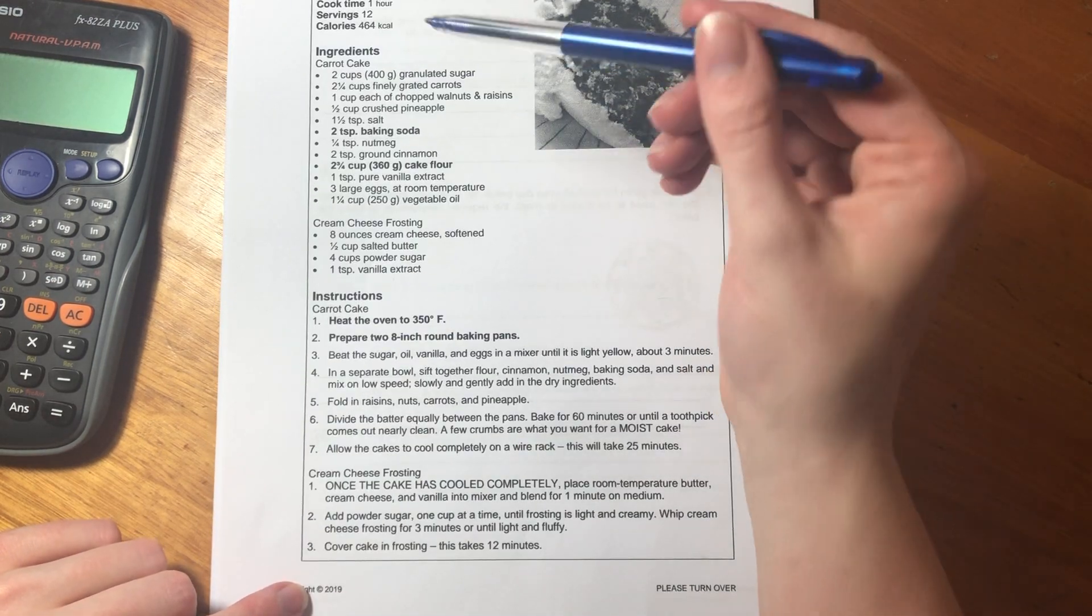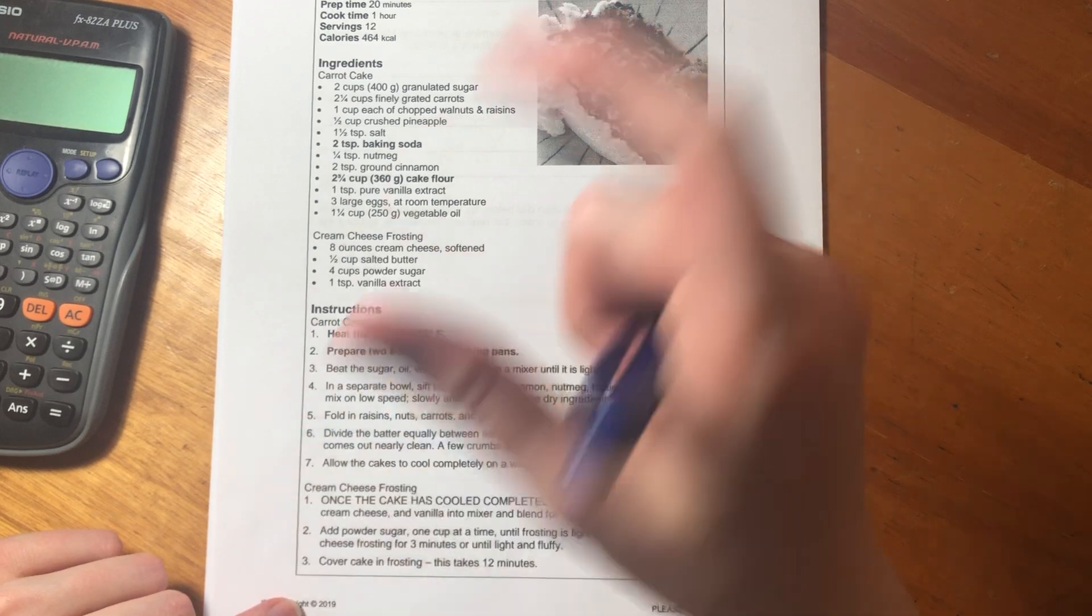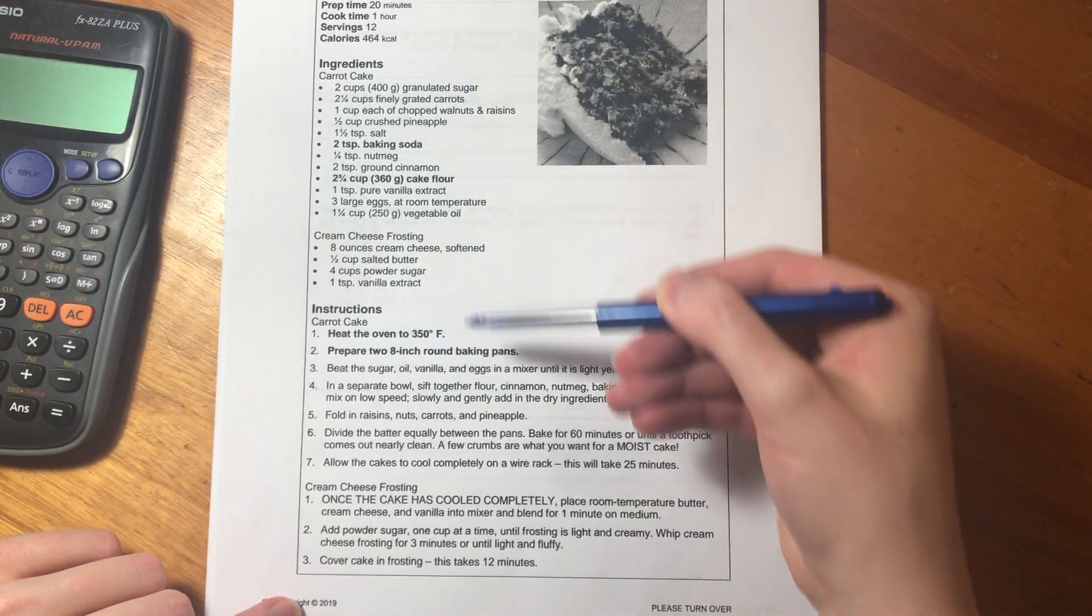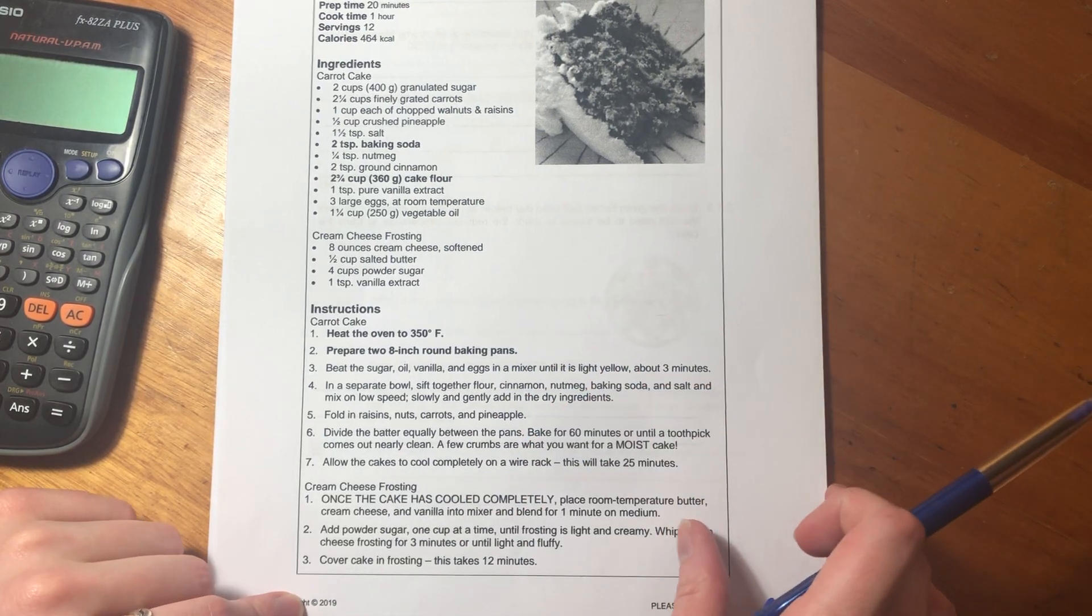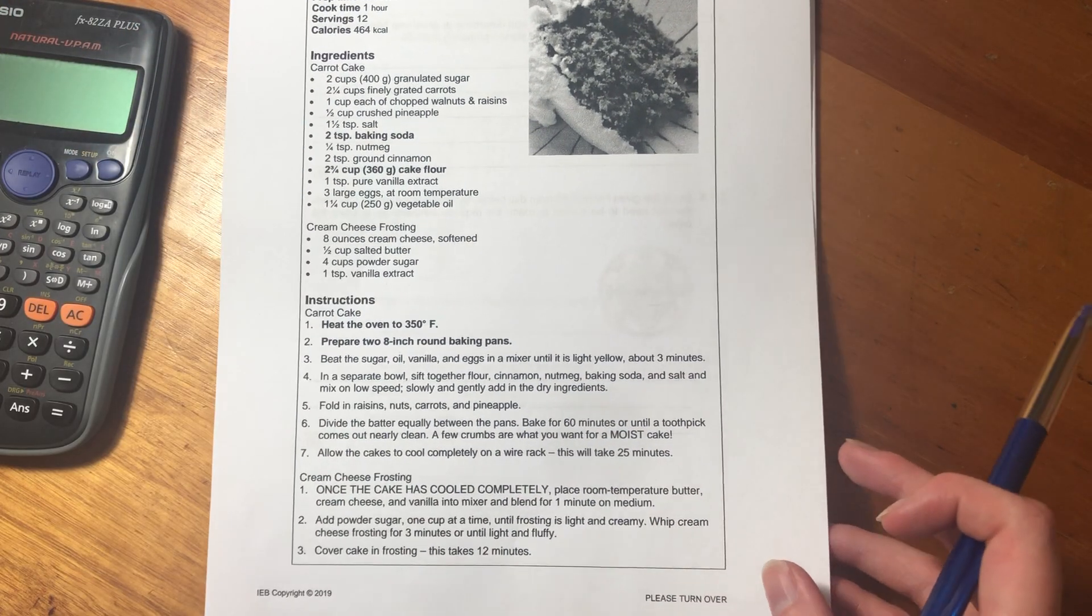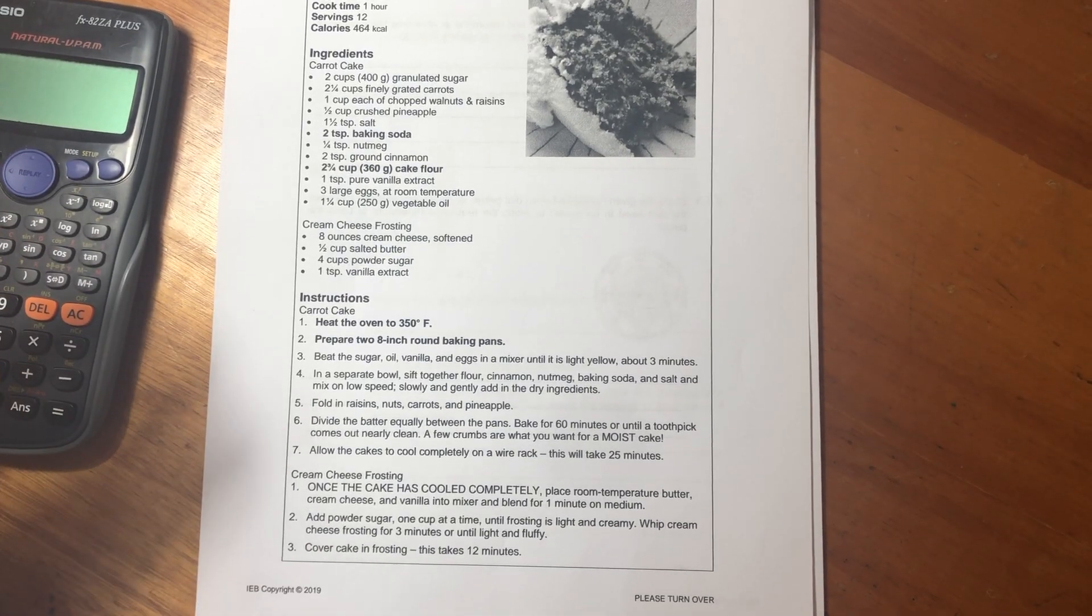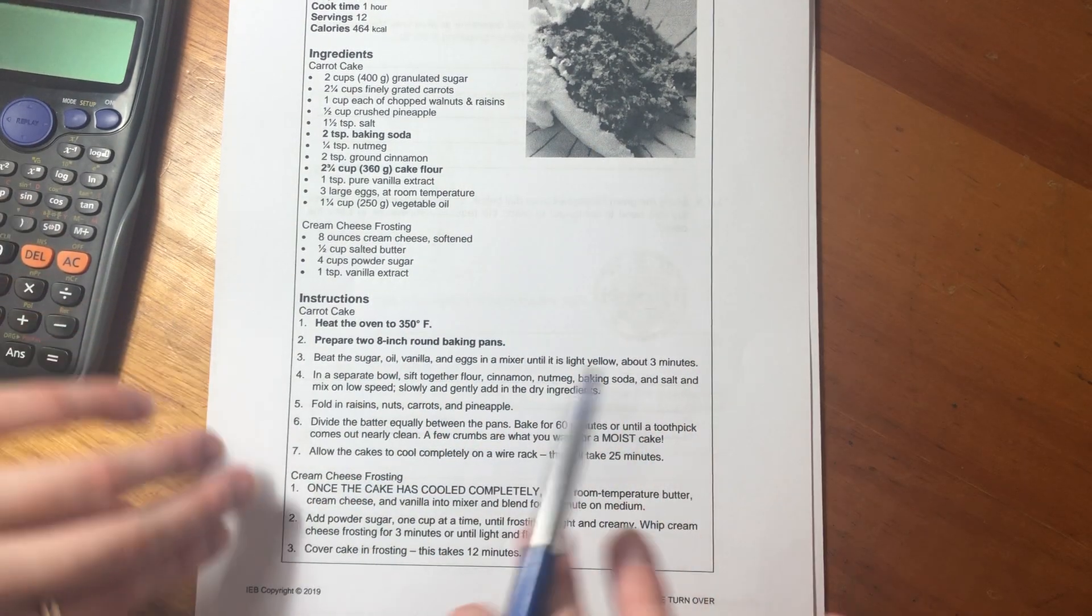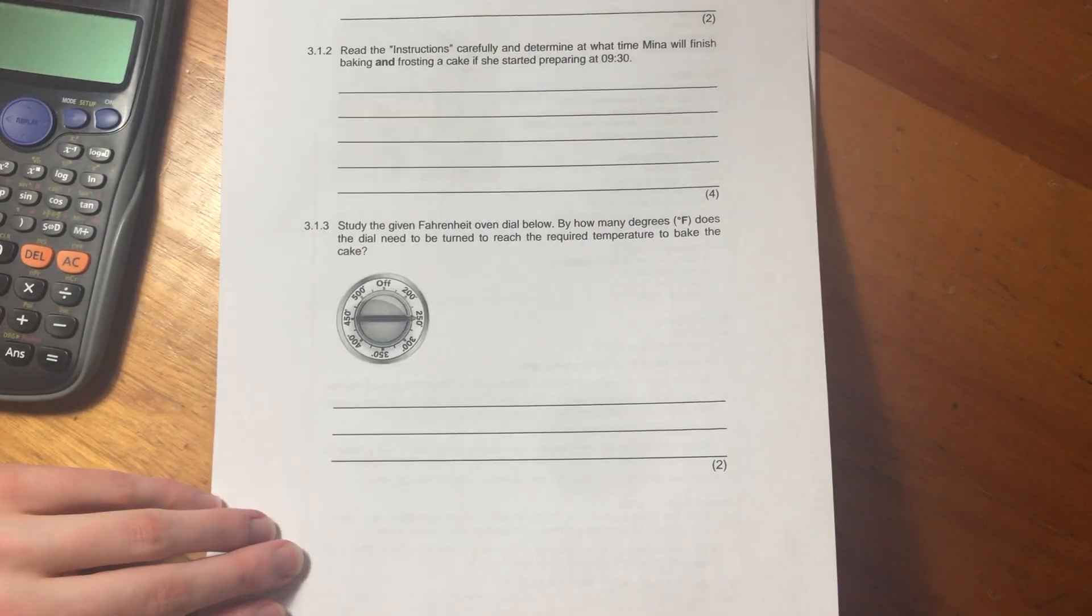Ingredients for the cake and then for the frosting. And then there's some instructions. They've highlighted a couple of things for us, so we must be quite cognizant of that because they don't do that for no reason. I wouldn't spend too much time reading this. Obviously do read it, but don't spend excessive time. Just read through it.